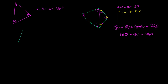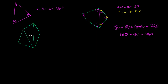So let me draw an irregular pentagon — one, two, three, four, five sides. So it looks like a little bit of a sideways house there. Once again, we can draw our triangles inside of this pentagon. So that would be one triangle there, that would be another triangle. So I'm able to draw three non-overlapping triangles that perfectly cover this pentagon — this is one triangle, the other triangle, and the other one.